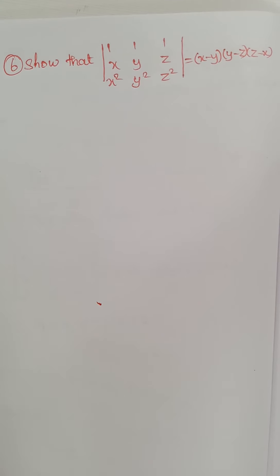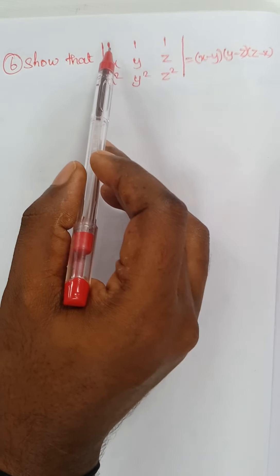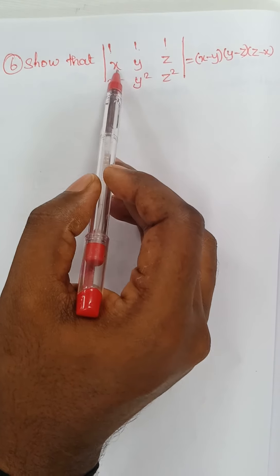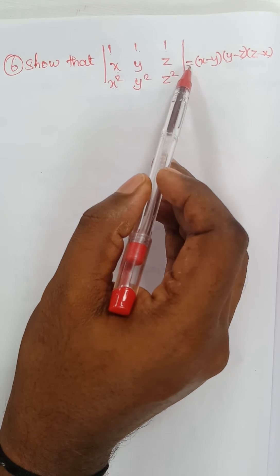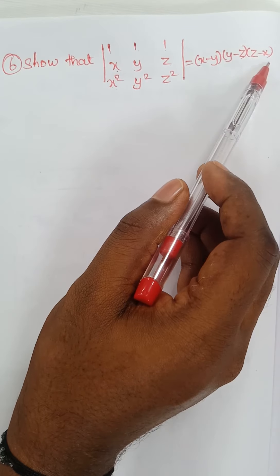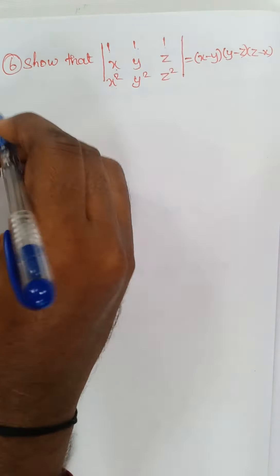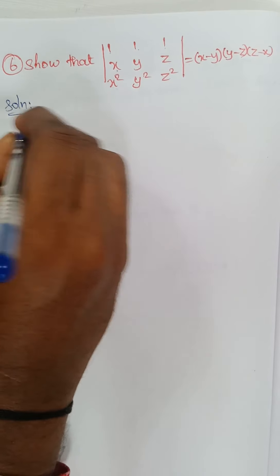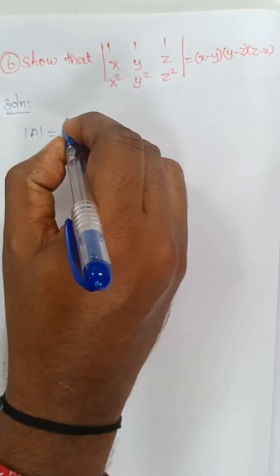Good morning students. Today we are going to discuss Exercise 7.3, Question Number 6: show that the determinant of the matrix with rows [1, 1, 1], [x, y, z], [x², y², z²] is equal to (x−y)(y−z)(z−x). So now I am taking this determinant, which is A, equal to that determinant.